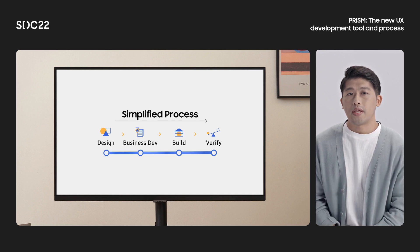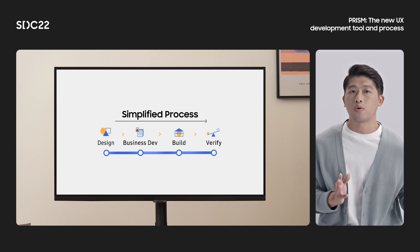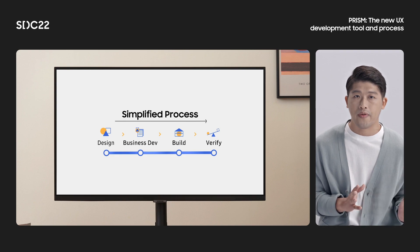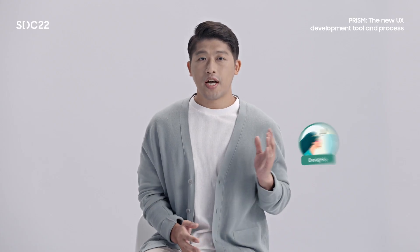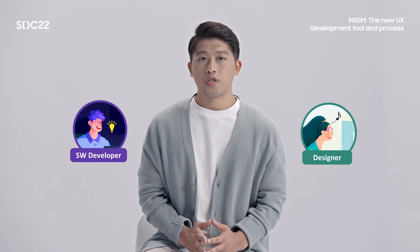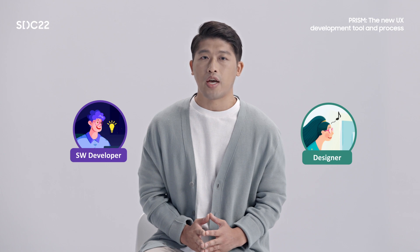Thus, what you see is what you get. Another advantage is that designers can now directly export their code in real time to check for errors and iterate their design before handoff. For both designer and developer, this means more time to focus on more creative endeavors instead of wasting precious time on unnecessary communication. Next, let's take a look at how designers are using PRISM.